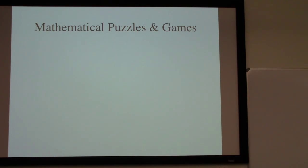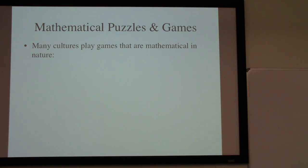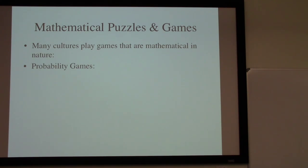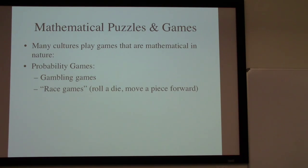This lecture is an introduction to mathematical puzzles and games, with a particular emphasis on the kinds of puzzles and games that come up in traditional cultures around the world. A lot of the games that various cultures play are in fact mathematical in nature. One kind of reason are games that involve some sort of probability calculations to analyze them — guessing what might happen. This includes both gambling games and what we refer to as race games, where you have pieces on a board and roll a die to decide how far ahead the pieces move.